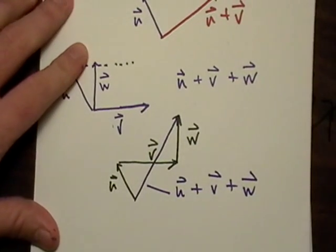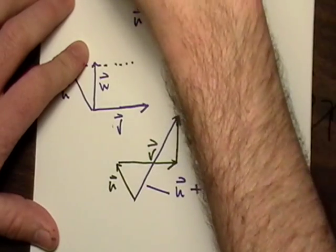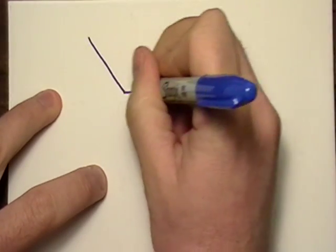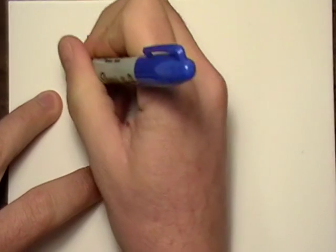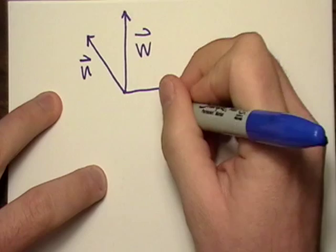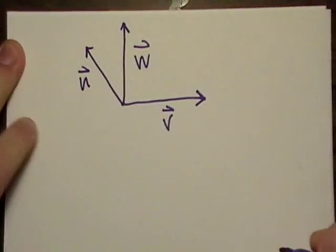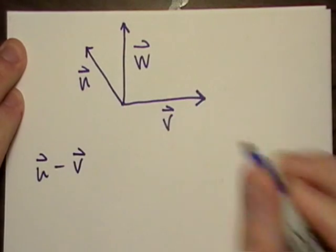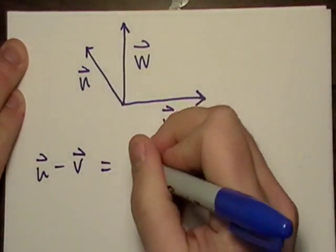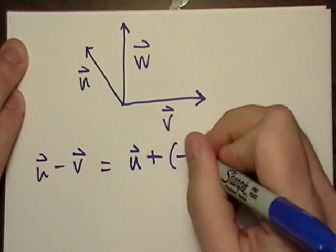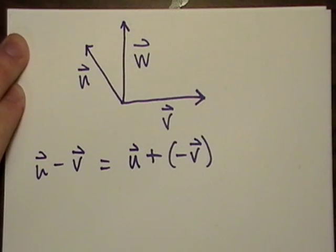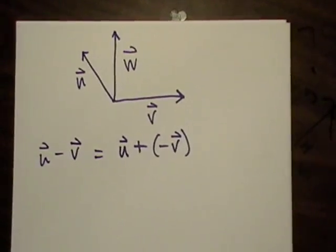It's not too bad. Let's switch it up a little bit and go to u minus v. Before we do that, why don't we rewrite that as u plus negative v?